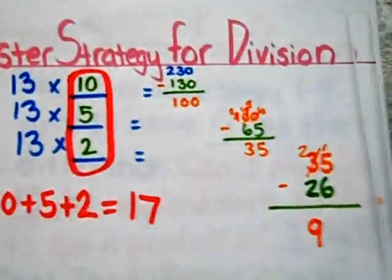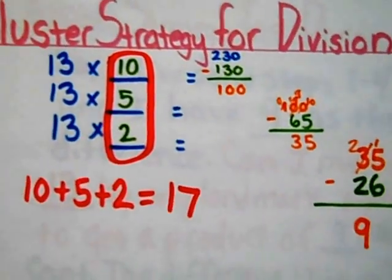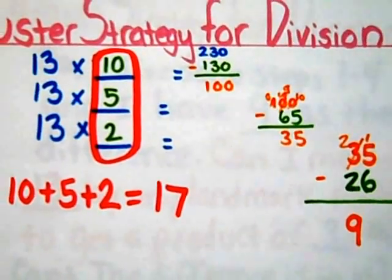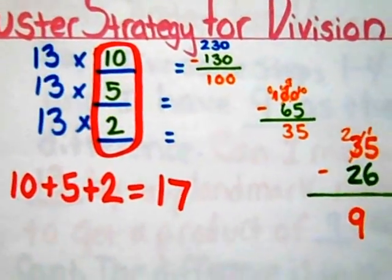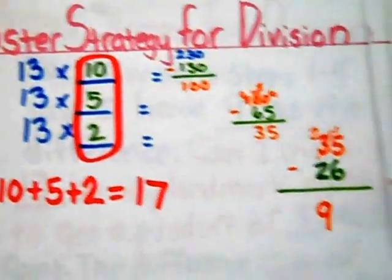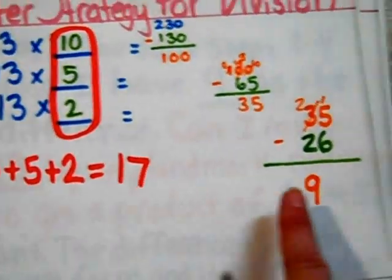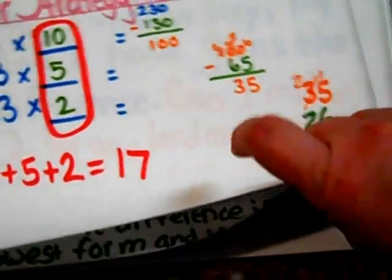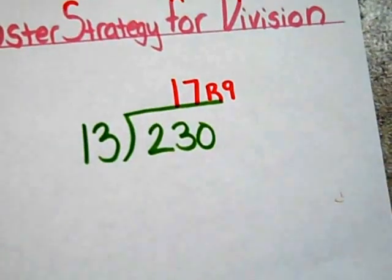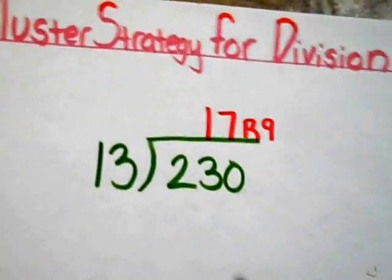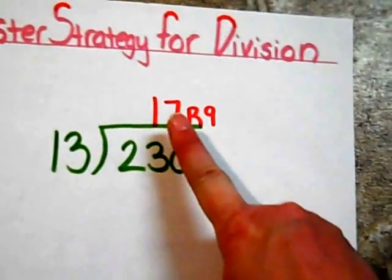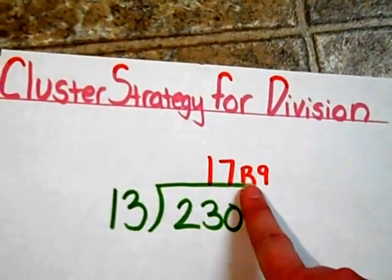So, since I have my lowest form, I move on to step number five. I cluster the factors and add them up. 10 plus 5 is 15. 15 plus 2 is 17. So, 230 divided by 13 is 17, remainder 9.